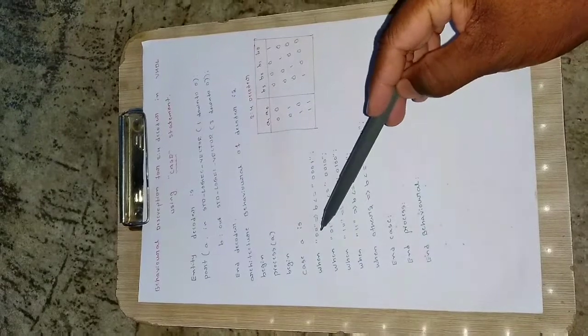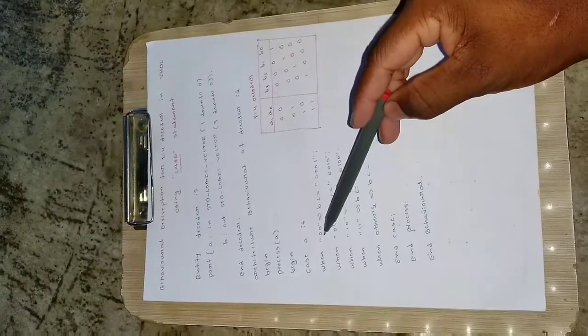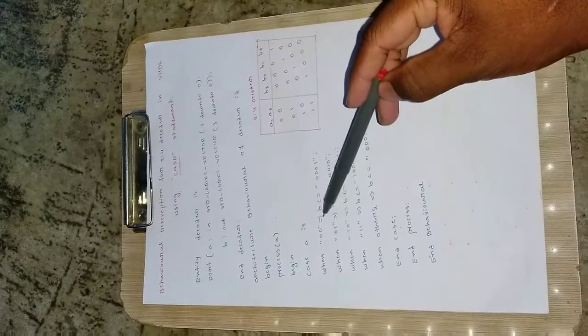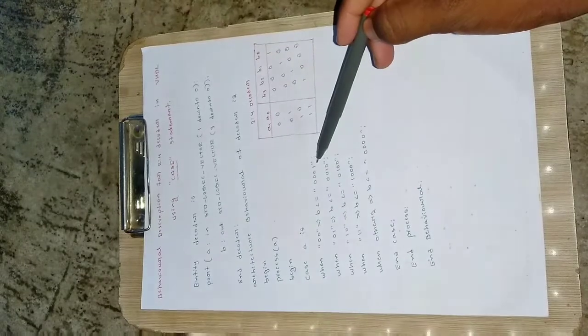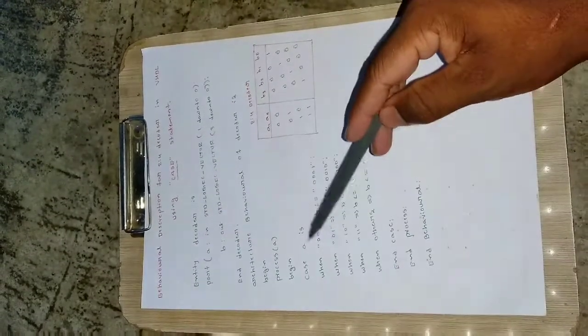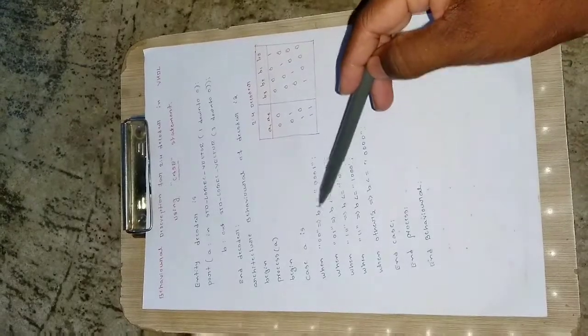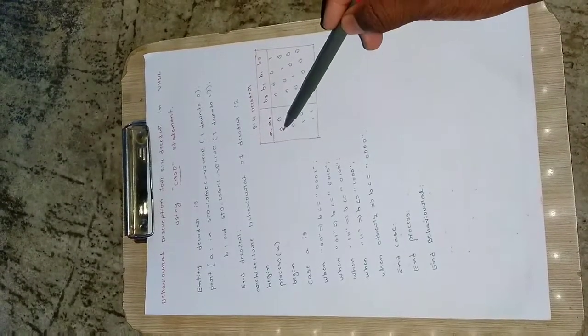So when A is 0,0. It will be reading like when A is 0,0, then that implies assign B with the value of 0,0,0,1. So this is how we can read these statements. When A is 0,0 assign B with value 0,0,0,1. So this statement we are implementing first.